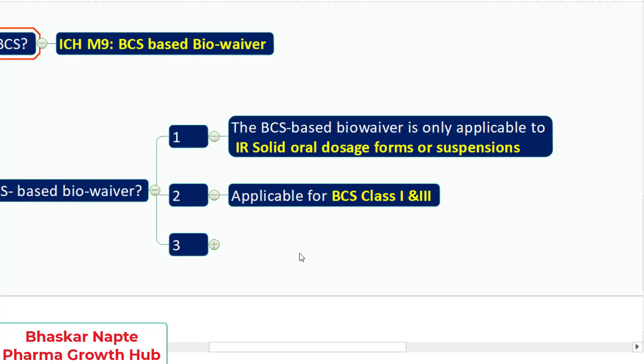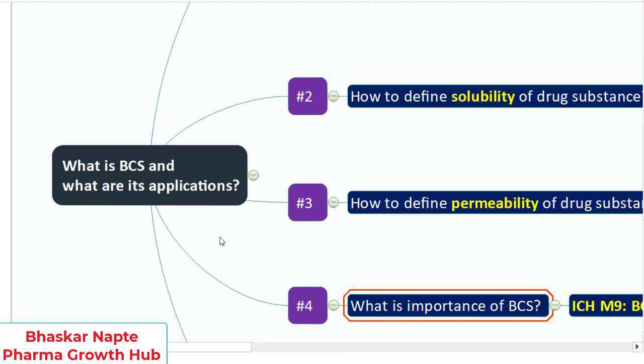Biowaiver for other strengths: in case if you're having multiple strength dosage forms, you conduct the bio study on one dosage form and the rest of the strengths can get the biowaiver if you prove that there is a similarity factor, a similar dissolution profile between your bio batch and the rest of the strength. This way I think you will be able to explain the importance of BCS-based biowaiver and why it is so important for the generic industry. Thank you so much.